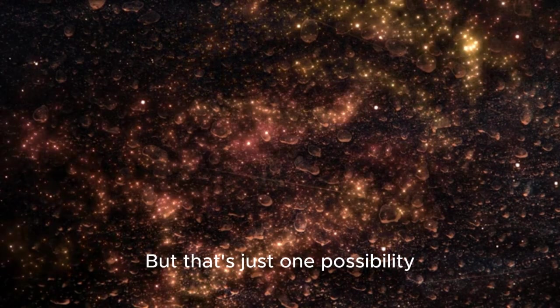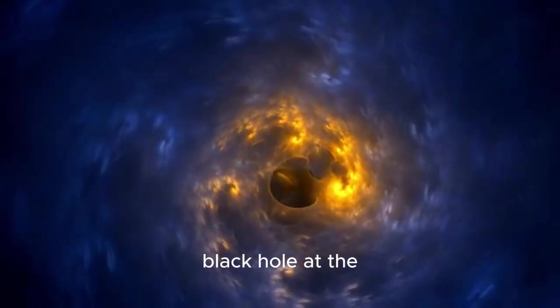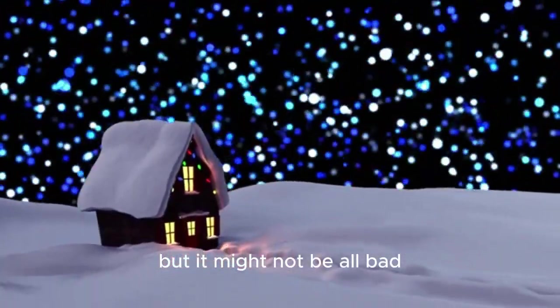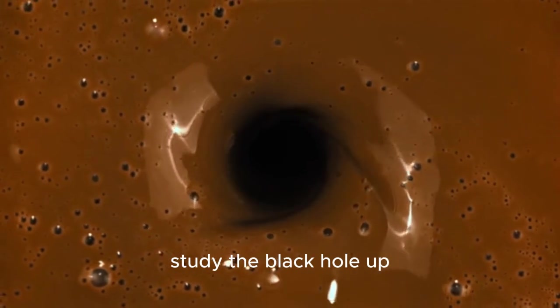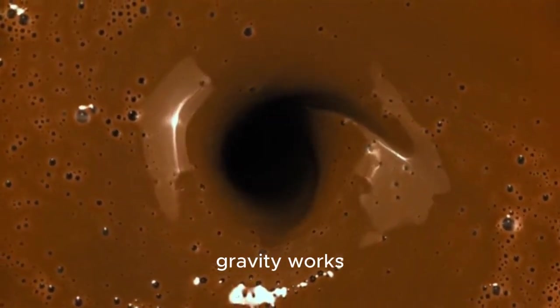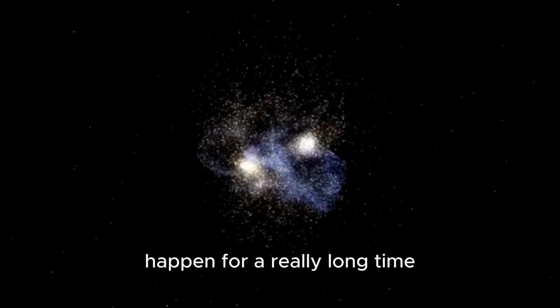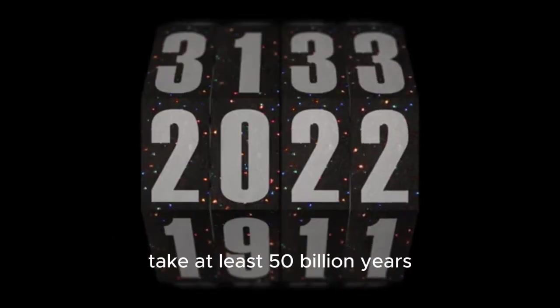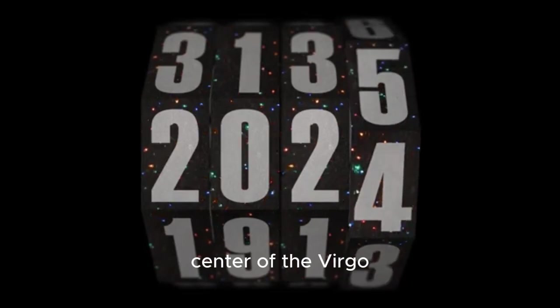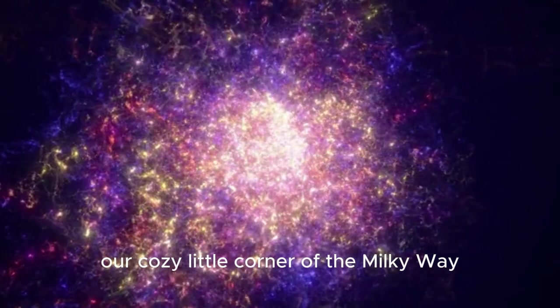But that's just one possibility. Another possibility is that our solar system will get pulled into the supermassive black hole at the center of the Virgo supercluster. Now, that sounds kind of scary, but it might not be all bad. After all, we might be able to study the black hole up close and learn all kinds of cool stuff about how gravity works. But even if we do get pulled into the black hole, it probably won't happen for a really long time. Scientists estimate that it'll take at least 50 billion years for our solar system to get close enough to the center of the Virgo supercluster to be affected by its gravity. So we've got plenty of time to enjoy our cozy little corner of the Milky Way.